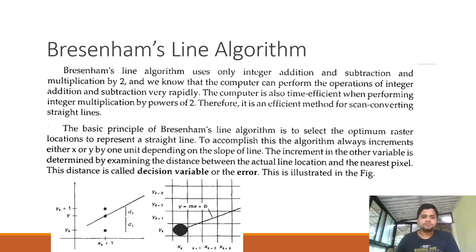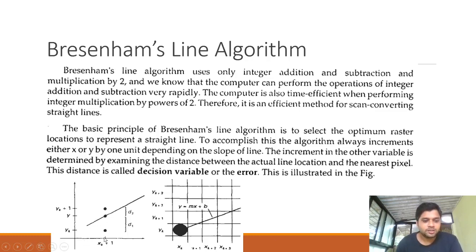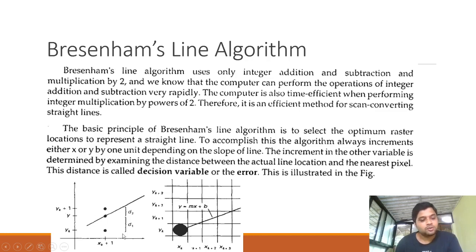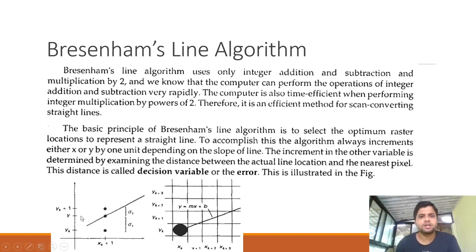The basic principle of Bresenham's line algorithm is to select the optimum raster location to represent a straight line. The next pixel position is chosen from the current pixel position (xk, yk). The next pixel's y-coordinate can be either yk+1 or yk. The intermediate y position shown lies between two successive y positions for a pixel.